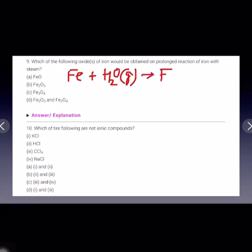So the correct option is C part, Fe3O4 iron oxide. Next is, which of the following are not ionic compounds?